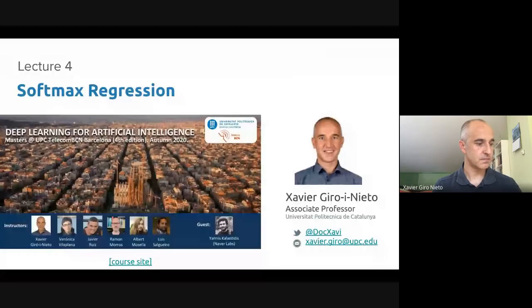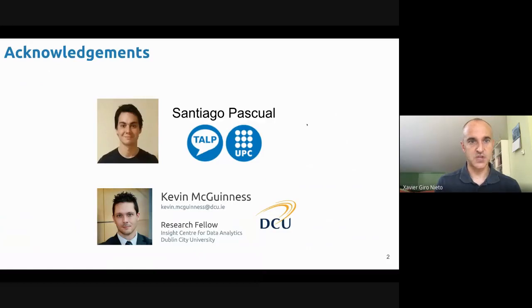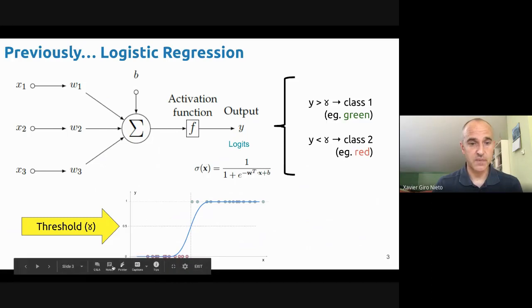Let me share the screen. First, acknowledgements to Santiago Pascual and Kevin McGuinness. What you've seen so far is that the perceptron is an architecture that allows to naturally handle logistic regression problems by using a sigmoid activation function, and then on top we can solve binary classification problems by setting a threshold on the output.